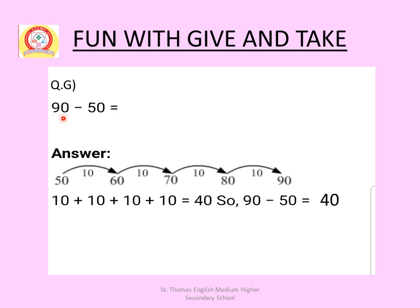Next: 90 minus 50. Start counting from 50 to 90. From 50 to 60 in 10 steps, 60 to 70 in 10 steps, 70 to 80 in 10 steps, 80 to 90 in 10 steps. So 10 plus 10 plus 10 plus 10 equals 40. Therefore 90 minus 50 equals 40.